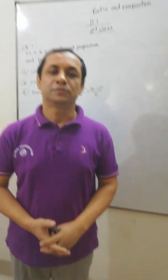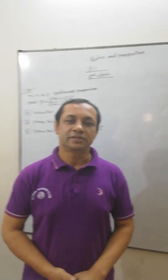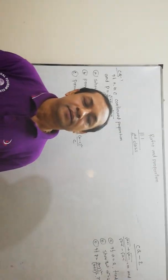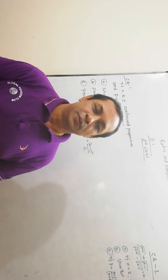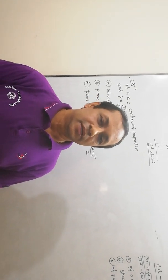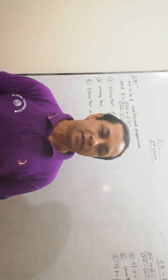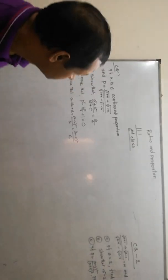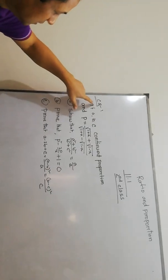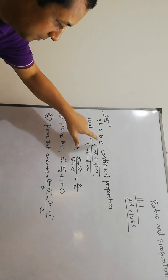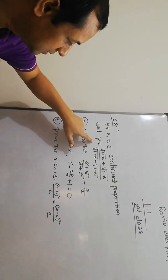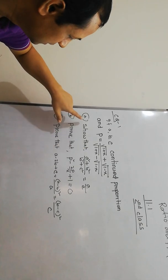Assalamu alaikum my dear students, I hope you are well. Today I will discuss proportion and ratio, chapter 11.1, second class CQ, first number one: if A, B, C are in continued proportion and p equals A to C, then...